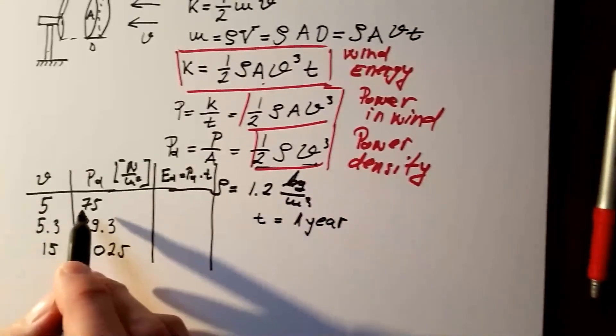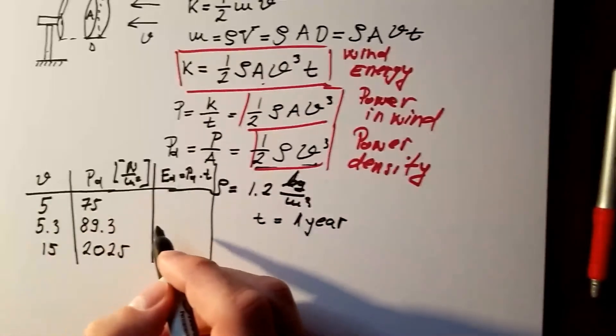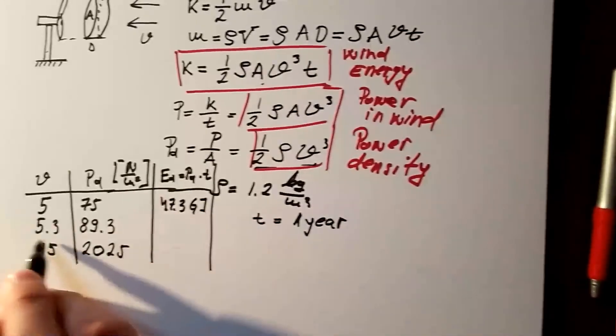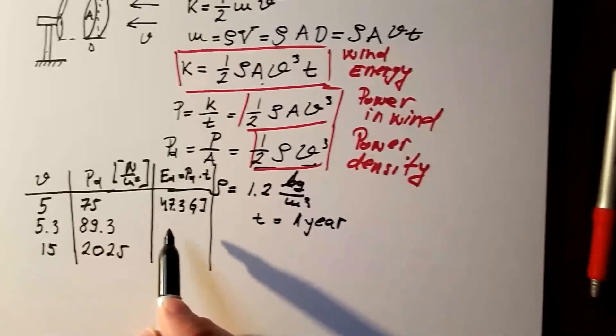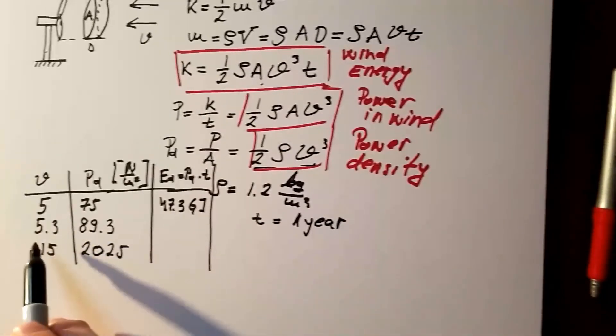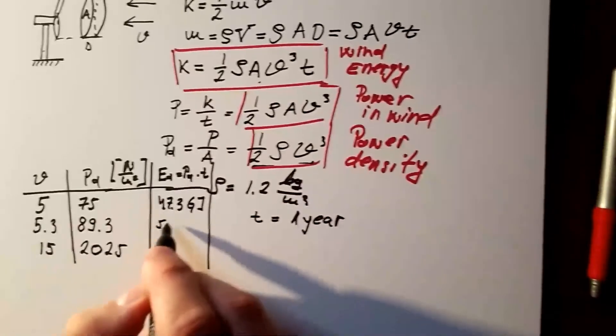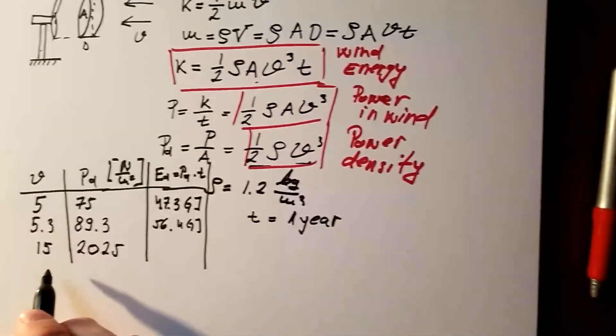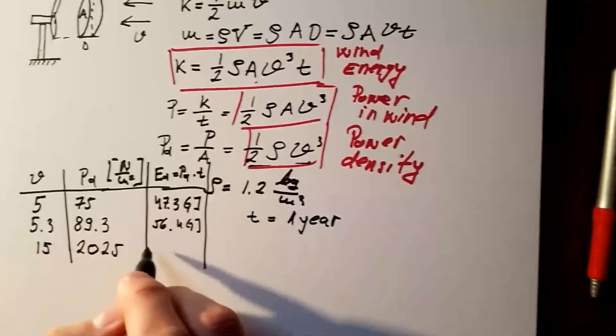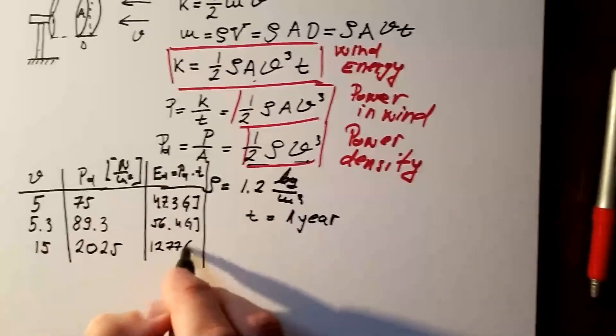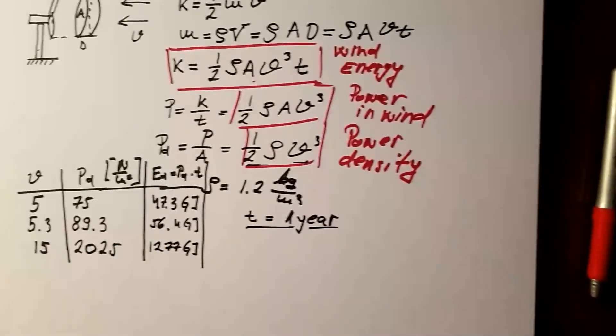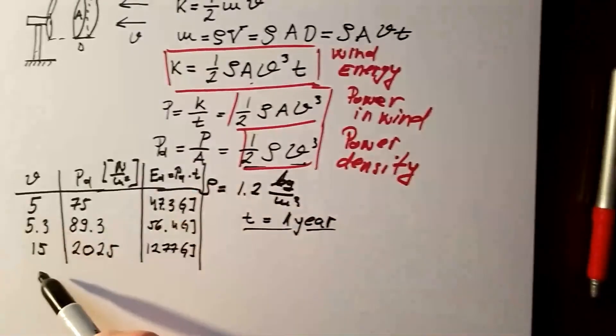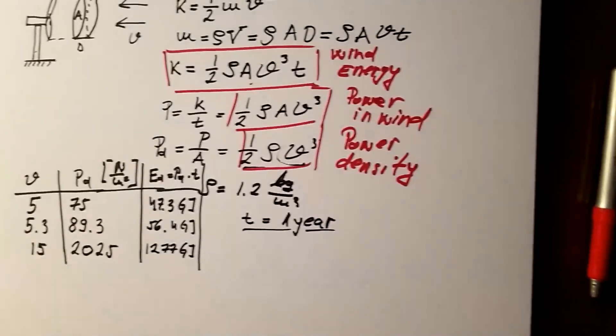So, if I multiply this with 1 year of seconds, I should get here 47.3 Giga Joules. Here is, so the energy density, wind energy density associated with wind speed of 5.3 meters per second is 56.4 Giga Joules. And finally, energy density associated with 15 meter per second wind speed is 1,277 Giga Joules over 1 year. As you can see, energy density is increasing rapidly, similar to power density with wind speed, because it is also proportional to the wind speed to the power of 3.